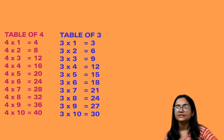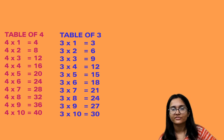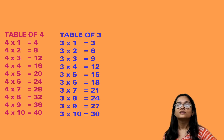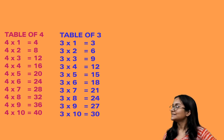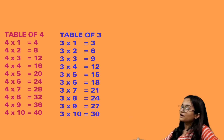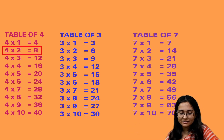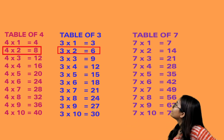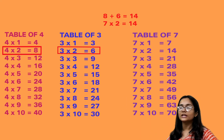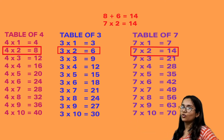Then we add the table of 3: 3 1s are 3, 3 2s are 6, 3 3s are 9, 3 4s are 12, 3 5s are 15, 3 6s are 18, 3 7s are 21, 3 8s are 24, 3 9s are 27, and 3 10s are 30. Now making the table of 7 again: 4 2s is 8, and 3 2s is 6. If we add 8 and 6 we get 14, and as we can see, 7 2s is 14.